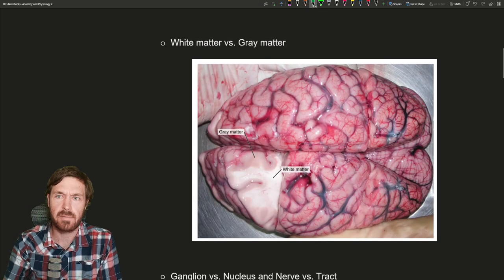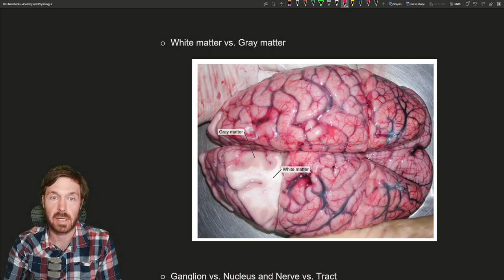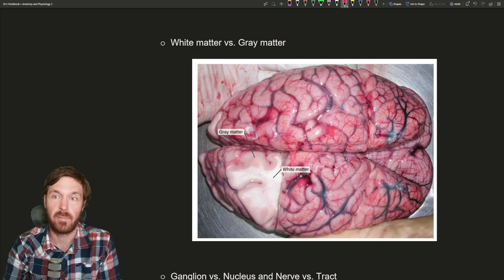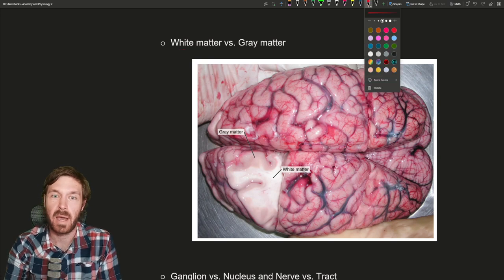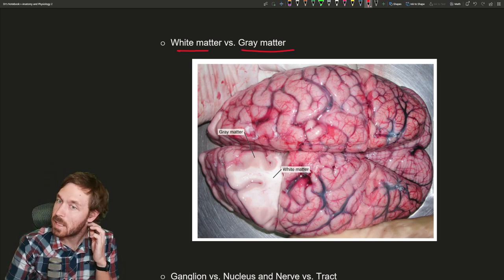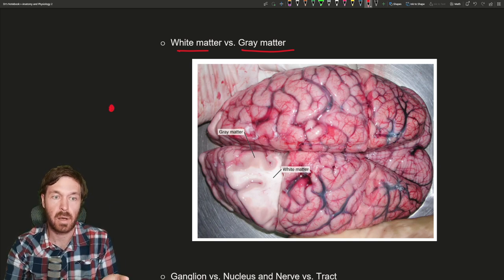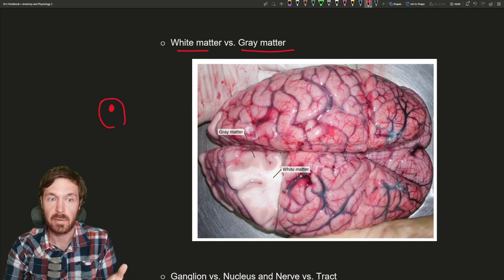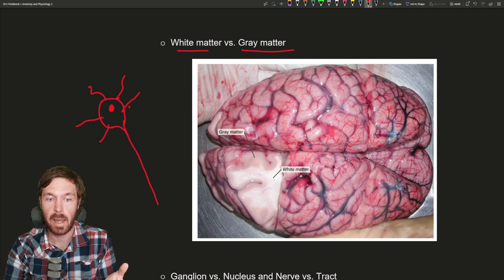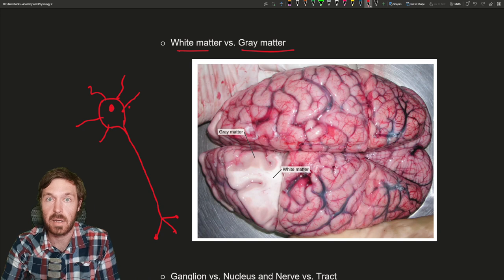Now within these divisions, we have some differences in what the matter looks like. Here we have what's called white matter versus gray matter. What this means is the neurons themselves - the neurons have a cell body, the nucleus of a neuron. They have these little branches called dendrites where they receive signals, and they have this long axon that goes down to wherever it needs to go.